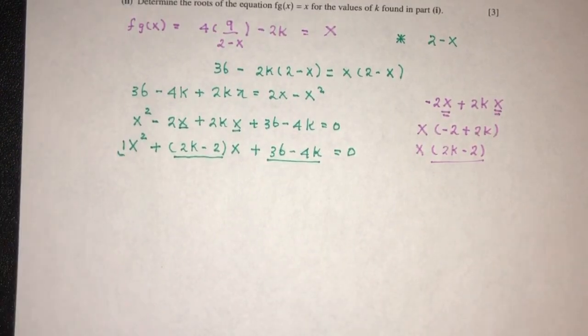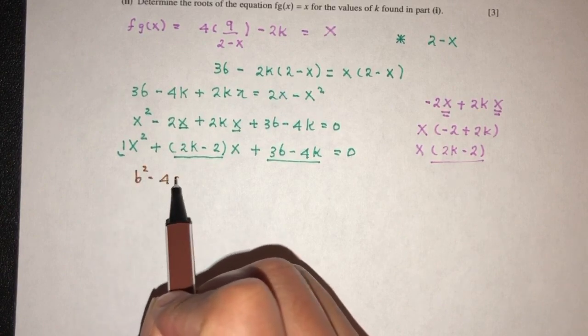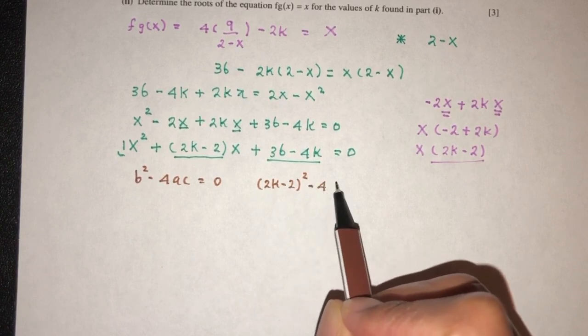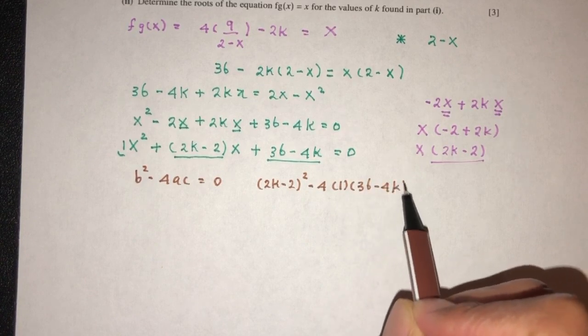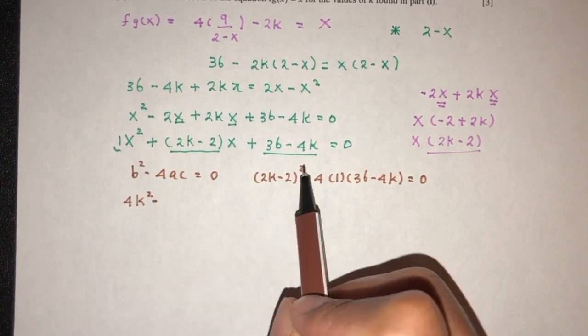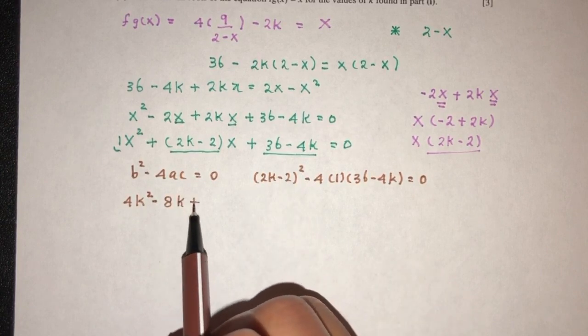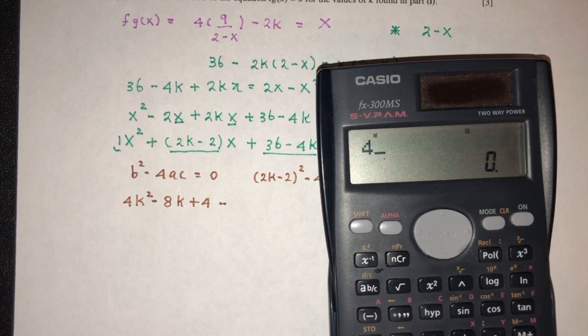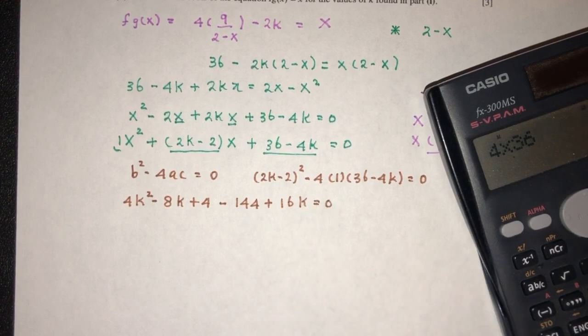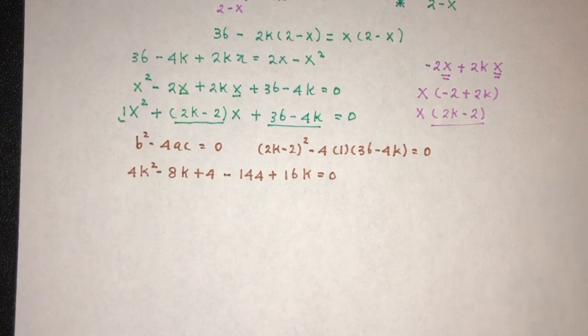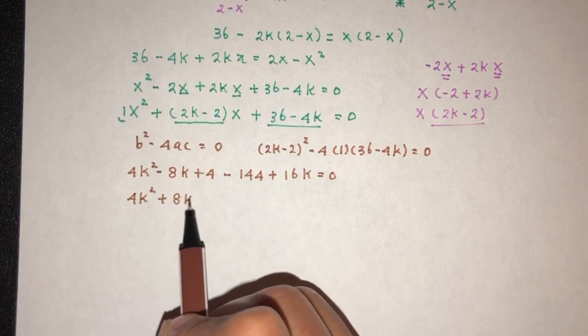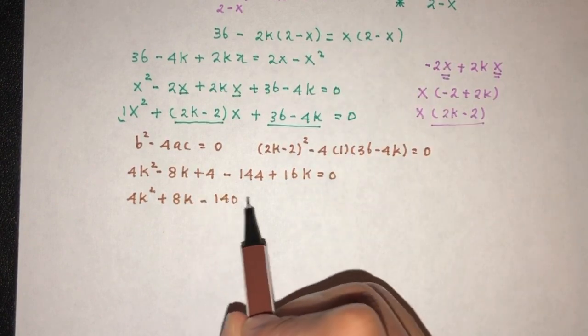So because they have two equal roots, I can say b² minus 4ac have to be zero. b² is (2k minus 2)² minus 4 times a times c have to be zero. So now we can simplify one by one to see what happens. That will be 4k² minus 2 times 2 times 2, that should be 8k, plus 4 minus, so what is 4 times 36? That will be 144 plus 16k equal to zero. Now we will have to try to simplify this one by one. We have 4k² minus 8 plus 16 should be plus 8k. And here we have plus 4, that should be minus 140 equal to zero.